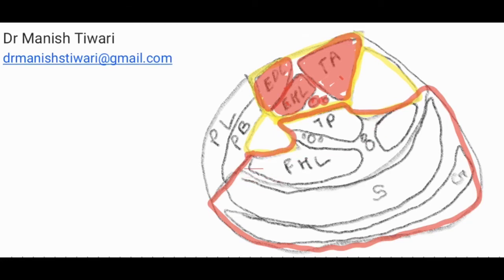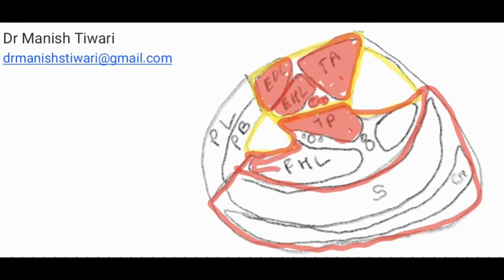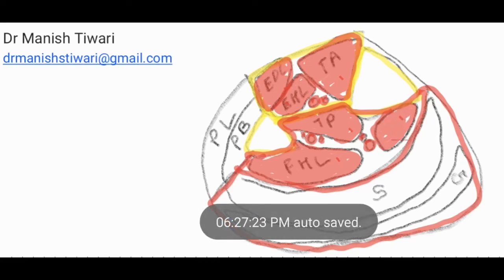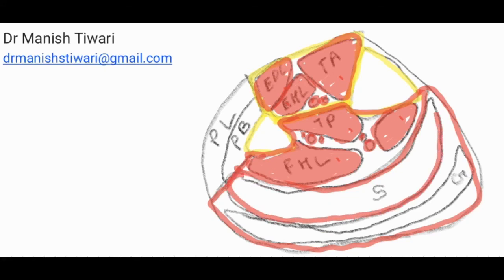Now coming to the posterior compartment, it is divided into two parts: the superficial part and the deep part. In the deep part, the first muscle is the tibialis posterior, attached on the medial surface of the fibula. In the upper part, above the attachment of the interosseous membrane, you have the extensors attached. Between the tibialis posterior and flexor hallucis longus you have the peroneal artery and vein, which are divisions from the posterior tibial artery and vein. There is also the flexor digitorum longus muscle.